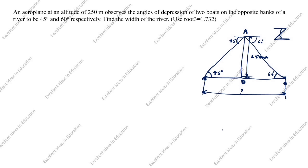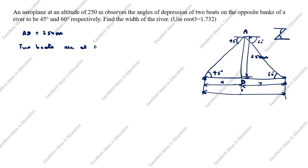We will take one part of the river as x and the other part as y. What is given: AD is equal to 250 meters — this is the aeroplane height. The two boats are on opposite banks, so BD is equal to x and DC is equal to y.